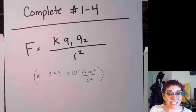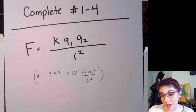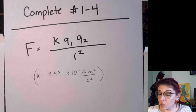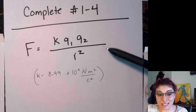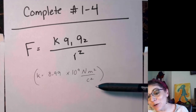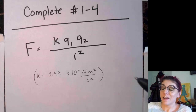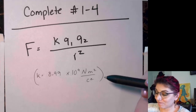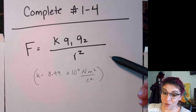At this point, please take a break to complete numbers one through four in the assignment packet. These directly deal with analyzing and interpreting Coulomb's Law. You may want to pause, write things down, take a stretch break, and get some water. Come back to this video when you've completed questions one through four.